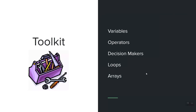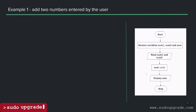So now you have your toolkit: you know what variables are, what operators are, what decision makers are, what loops are, and what arrays are. Let's try to do some examples using these.